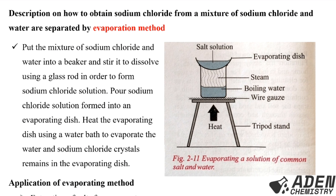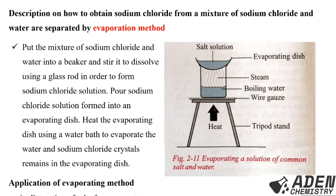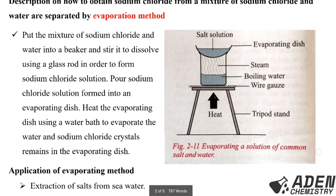Here is how to obtain sodium chloride from sodium chloride solution by evaporation. Put the mixture of sodium chloride and water into a beaker and stir it using a glass rod to form sodium chloride solution. Pour the sodium chloride solution into an evaporating dish. Heat the evaporating dish using a water bath to evaporate the water; sodium chloride crystals remain in the evaporating dish. The diagram shows the evaporating dish with salt solution being heated using a water bath.